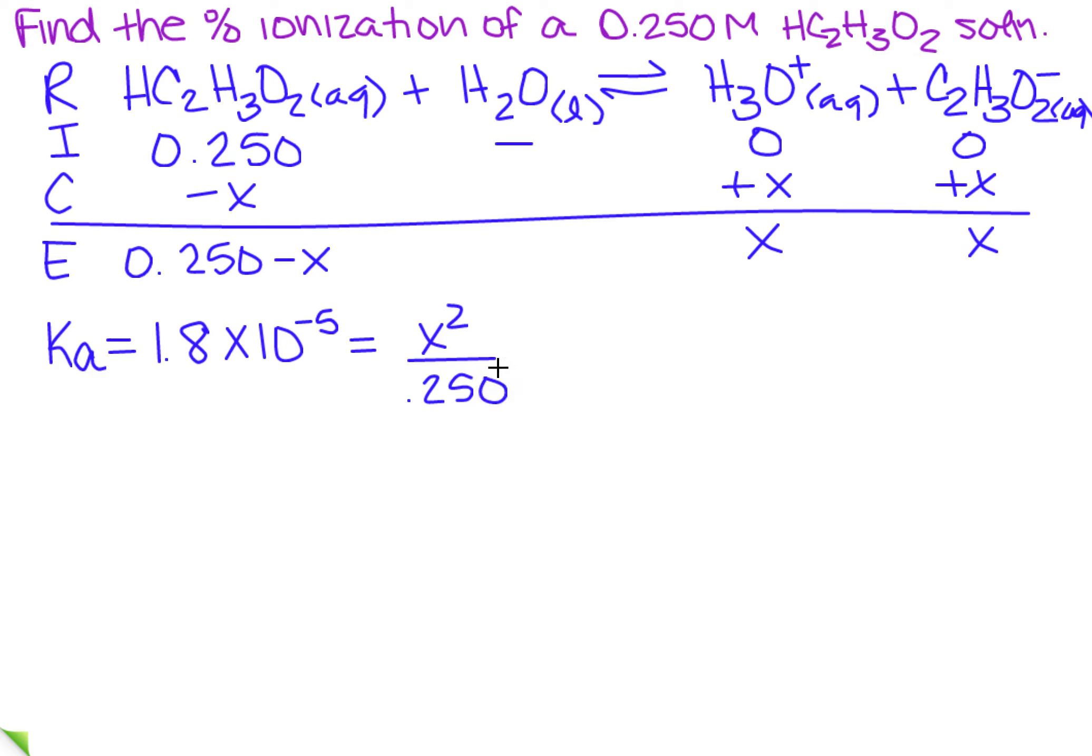So all I need to do is cross-multiply and then solve for x. So I've got 1.8 times 10 to the minus 5 times 0.250. Take the square root of that, and that will equal the square root of x squared. So I got 2.12132 times 10 to the minus 3rd.